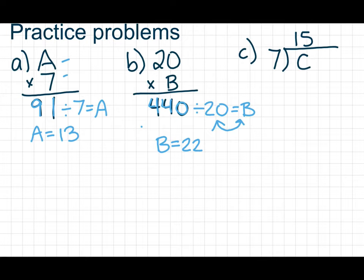All right, C. C divided by 7 equals 15. This is our unknown. This also happens to be our dividend, and it also happens to be the biggest number, the product. So all I have to do is take the other two numbers and multiply them, and I will get C, which is 105.